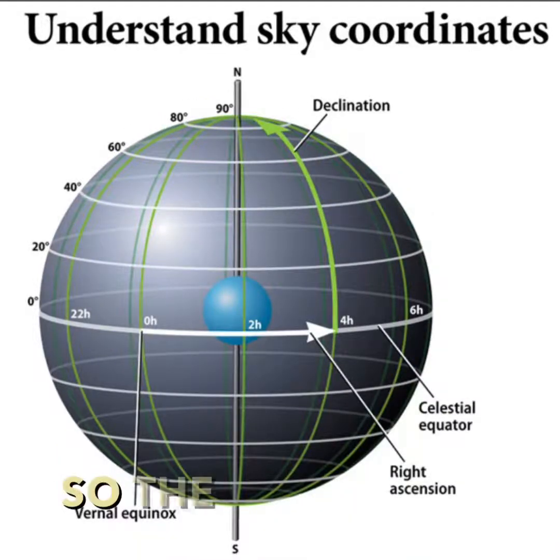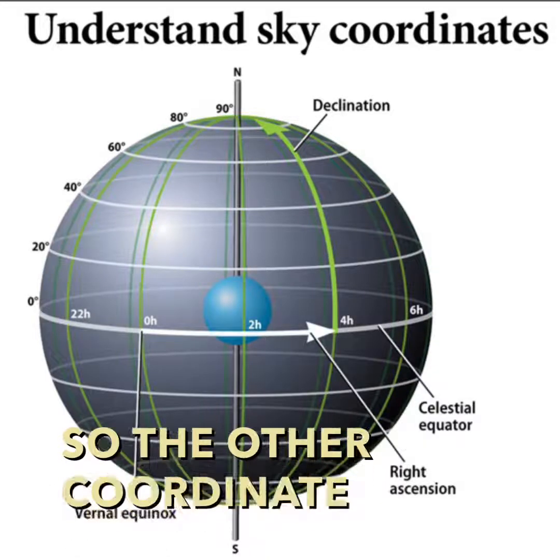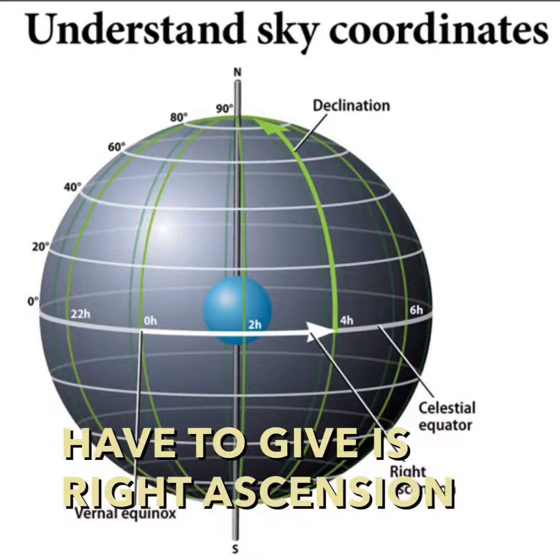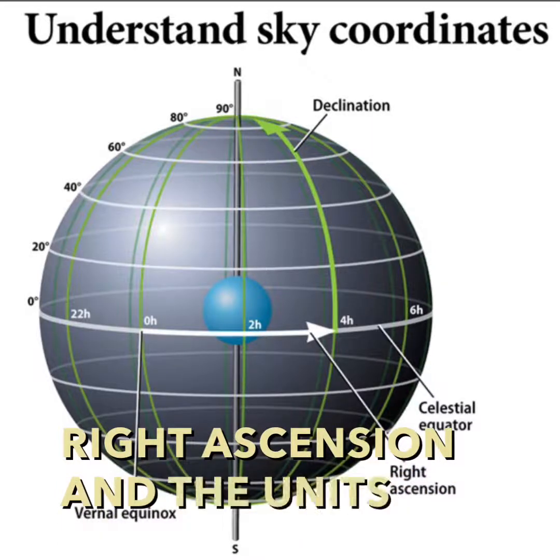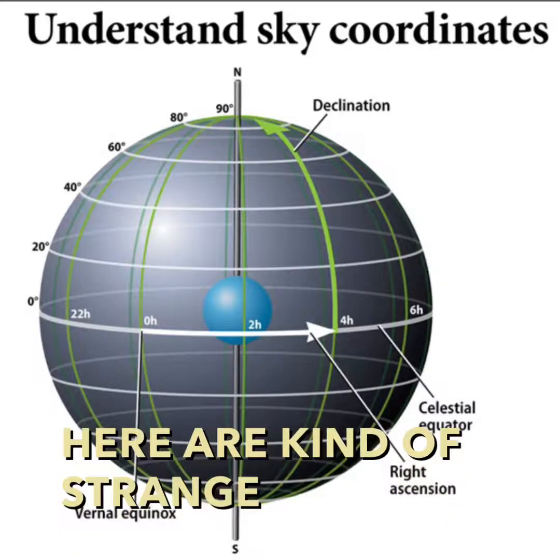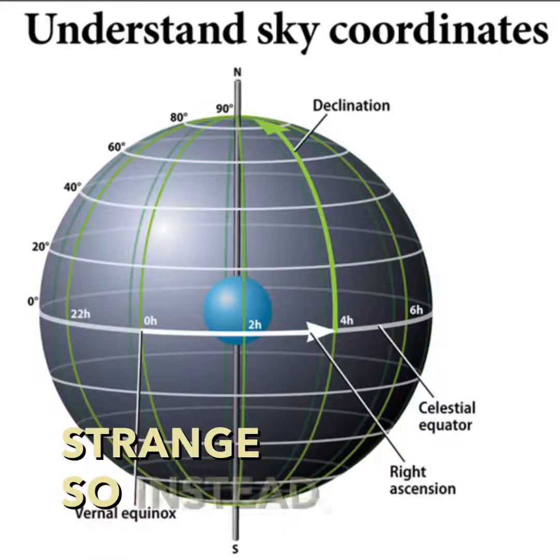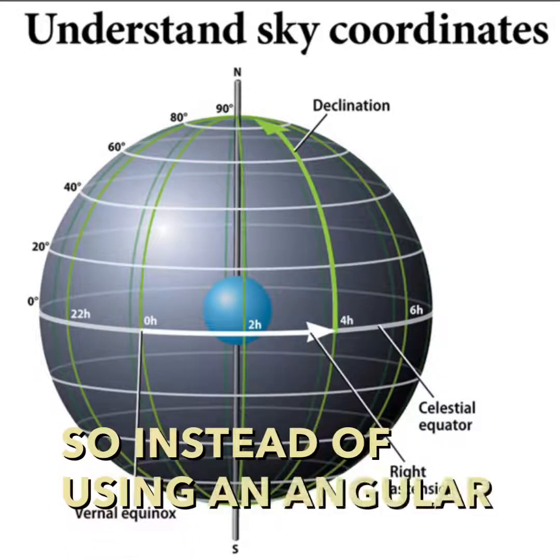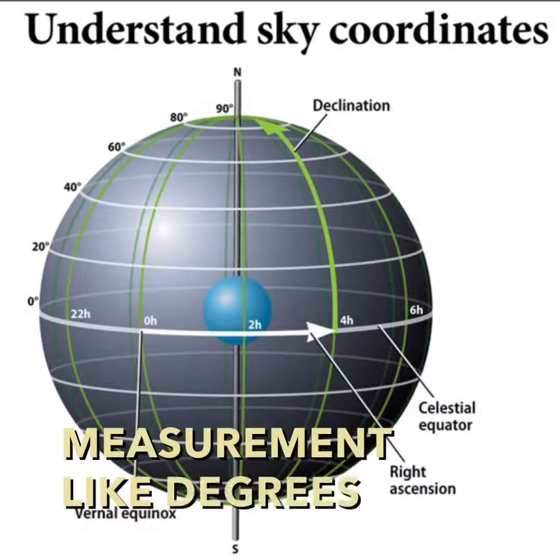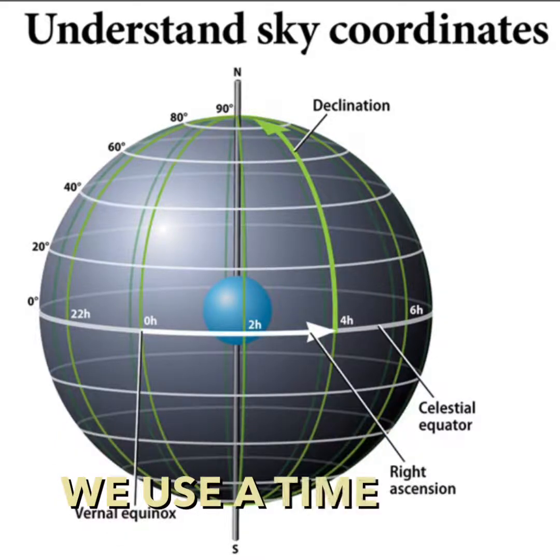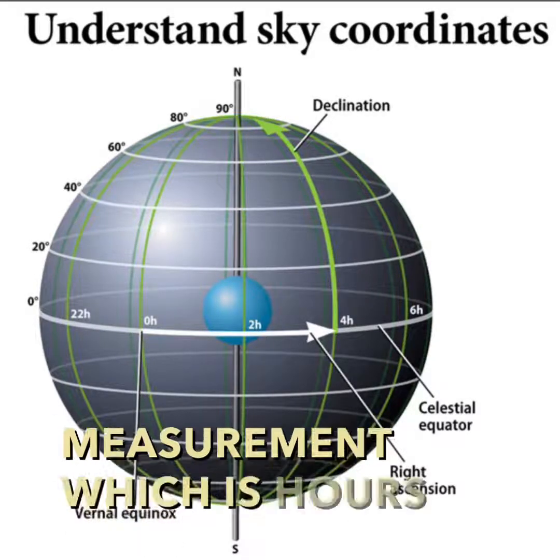So the other coordinate that we have to give is right ascension and the units here are kind of strange. So instead of using an angular measurement like degrees we use a time measurement which is hours.